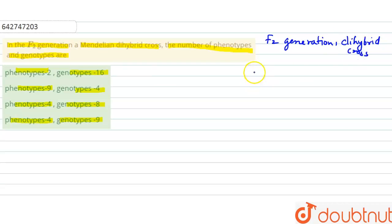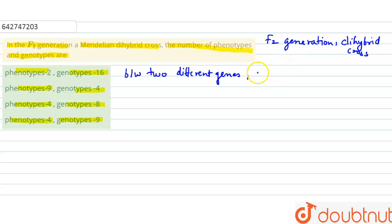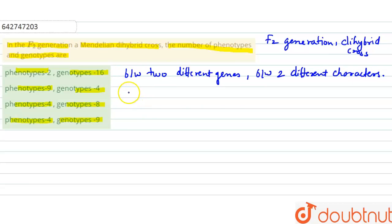In the dihybrid cross, we have to find the number of phenotypes and genotypes. In a dihybrid cross, there is a cross between two different genes — that means a cross between two different characters.